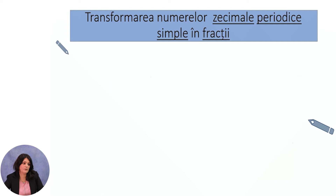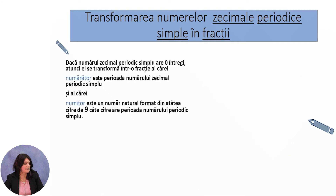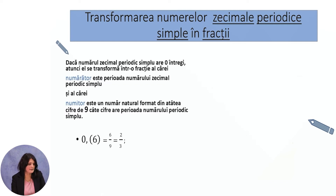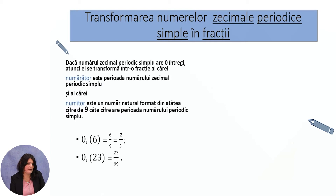Transforming simple periodic decimal numbers into fractions: if the simple periodic decimal number has integer part 0, it transforms into a fraction whose numerator is the period of the number and whose denominator is a natural number formed by as many nines as there are digits in the period. For example, 0.(6): numerator is 6, denominator is 9. For 0.(23): we write 23 over 99 — two nines because there are two digits in the period.